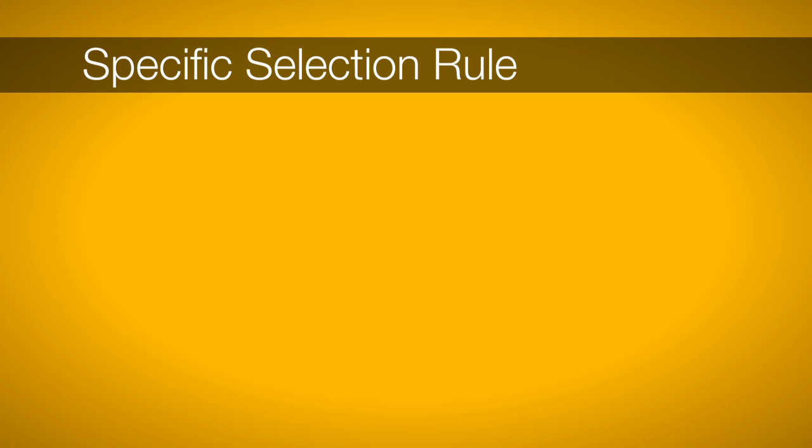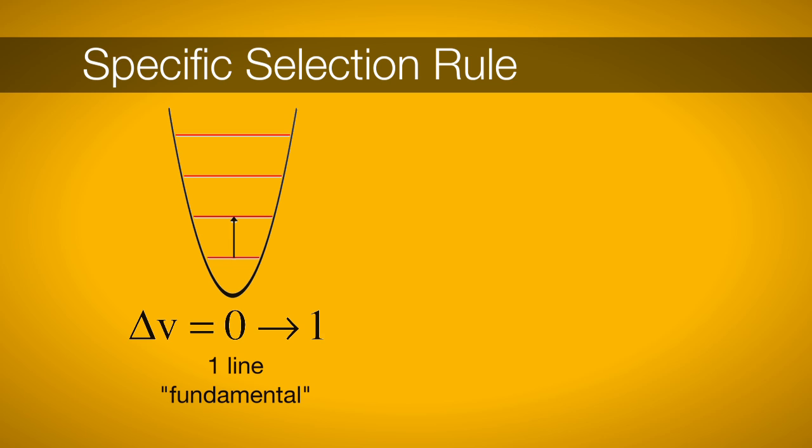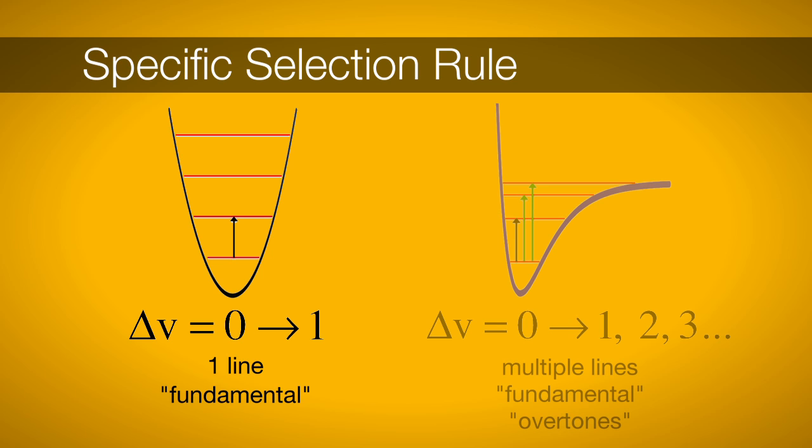Specific selection rules tell us, specifically, what quantum number transitions we should expect. In a harmonic oscillator, the specific selection rule is delta V equals 1. This selection rule is relaxed in the anharmonic case where, along with the delta V equals 1, we can also see delta V equals 2, 3, and so on. These transitions are only weakly allowed and are not always observed. Overtones can sometimes be observed by using highly sensitive instrumentation. We will see overtones in our experiment. They will allow us to determine how the molecular potential differs from a simple harmonic potential.